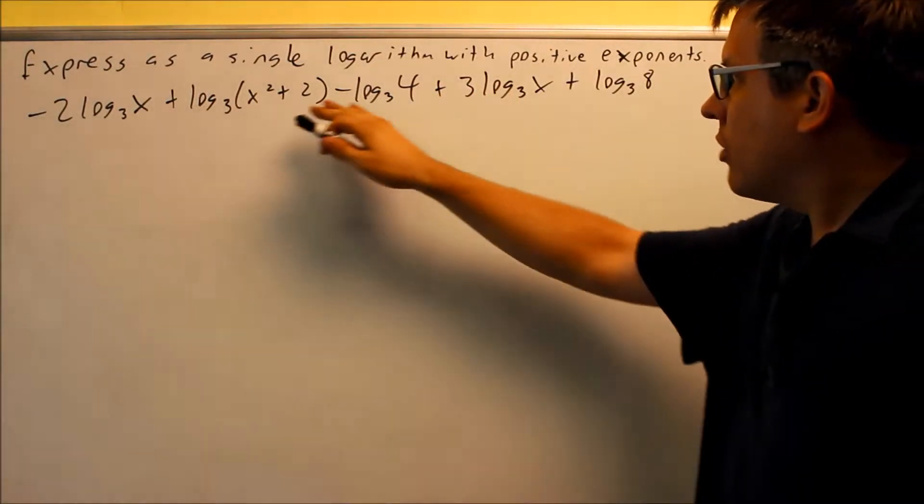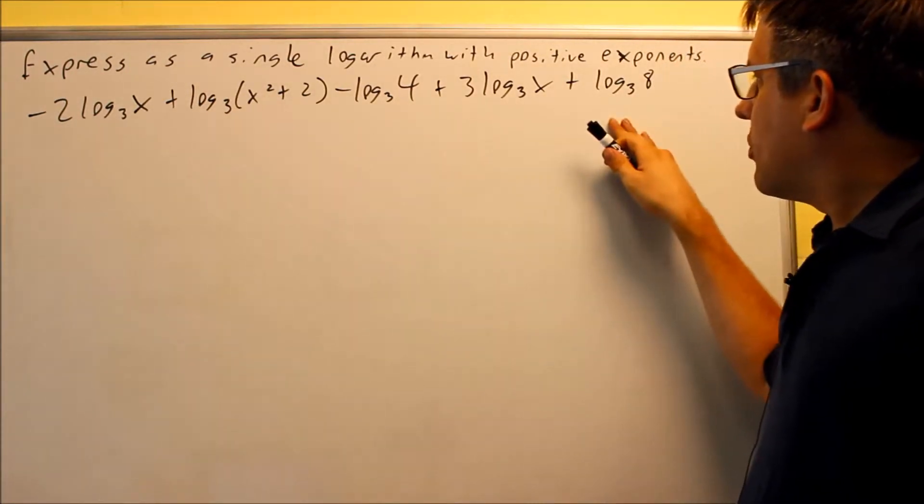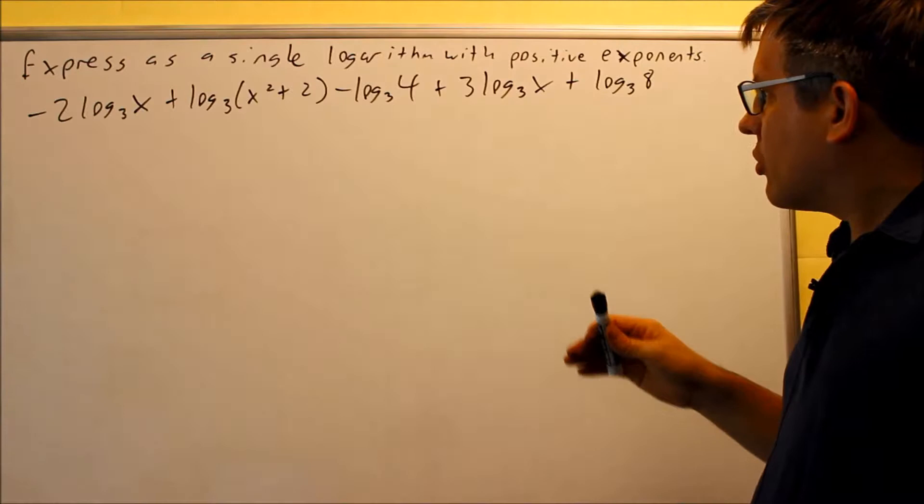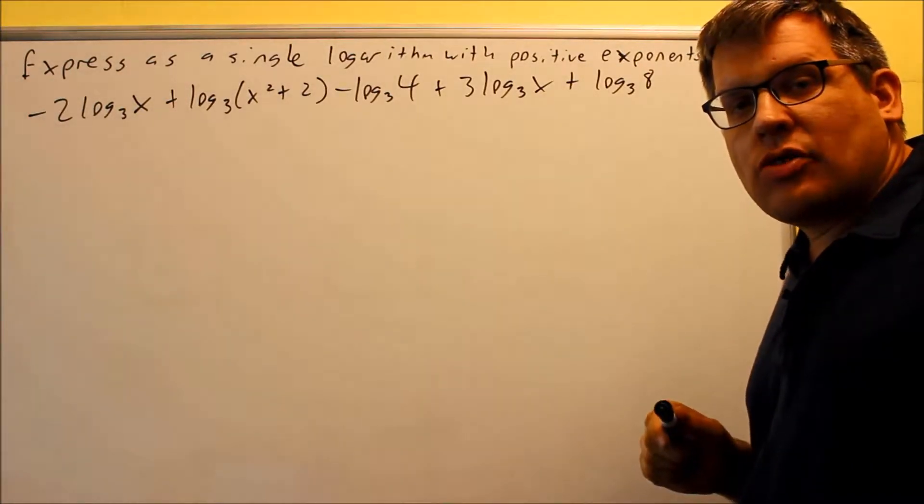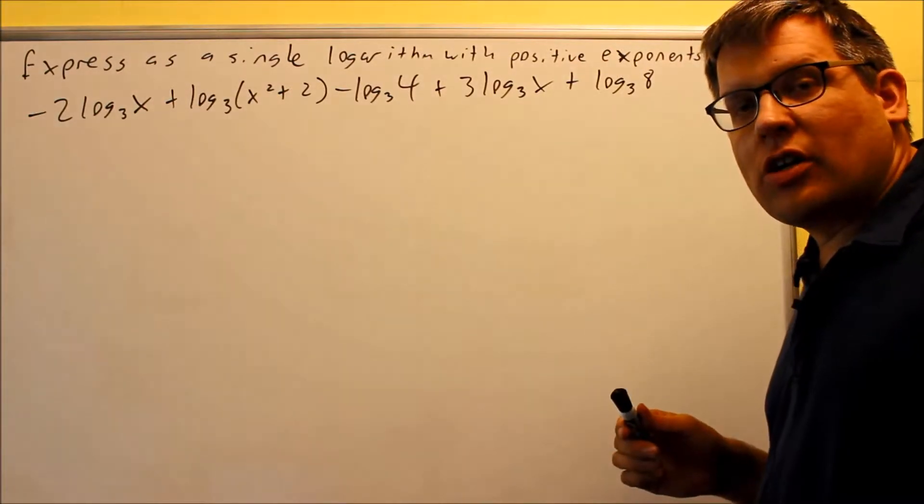Okay, we have another one where we want to express as a single logarithm, and we have five different terms here. The best way to do this would be to actually group together the ones with plus signs and the ones with minus signs. It will make things easier when we use our log rules to have all of them with the correct sign all together.